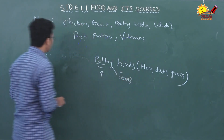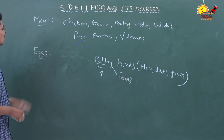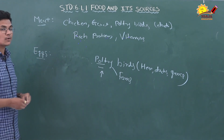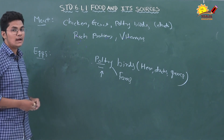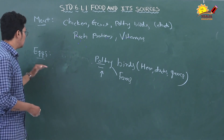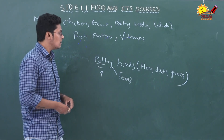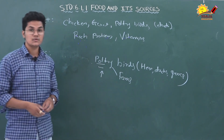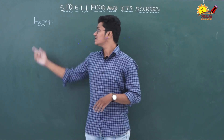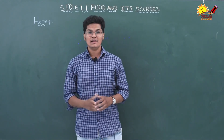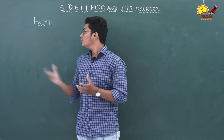We get meat from chicken, goat, and poultry birds — they are rich in protein and vitamins. Eggs are also rich in protein and vitamins, and we get eggs from poultry birds like hen, ducks, and goose.